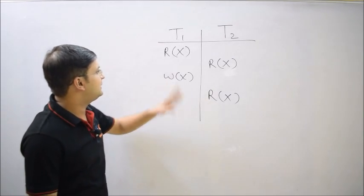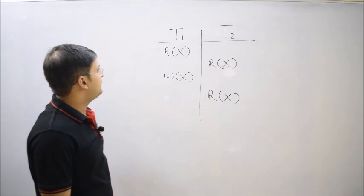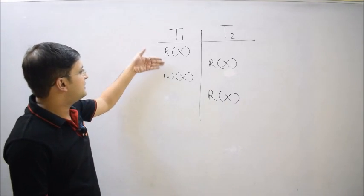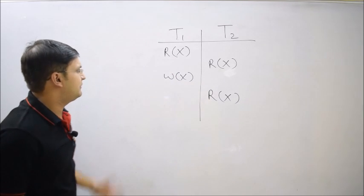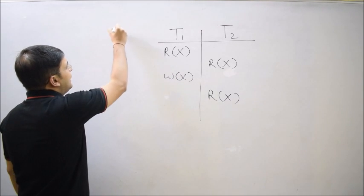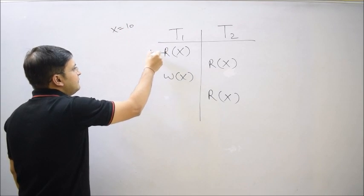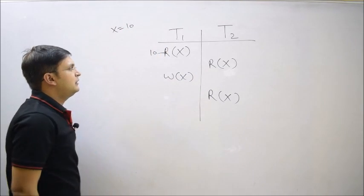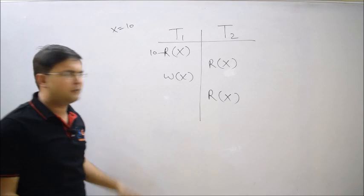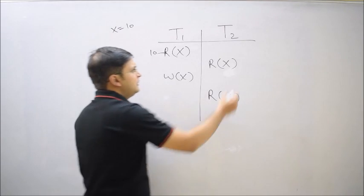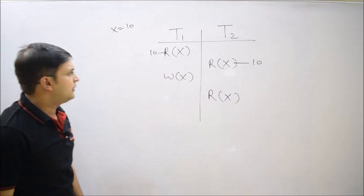I have taken a scenario where we have two parallel executing transactions T1 and T2. Transaction T1 starts executing and reads some value of a variable x — let's say the initial value of x is 10. Transaction T2 comes and it also wants to do a read operation. No problem — transaction T2 also reads the same value, which is 10.